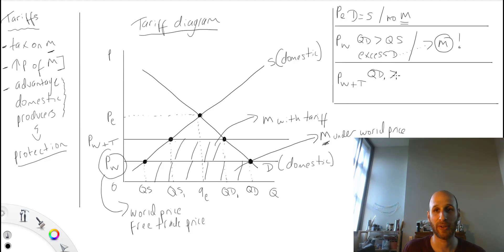QD1 is greater than quantity supplied, so we have excess demand. Right, this excess demand will be filled by imports.